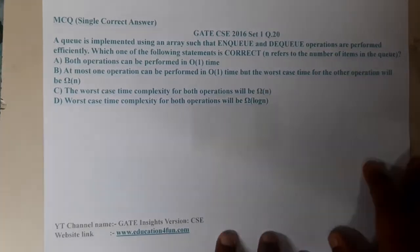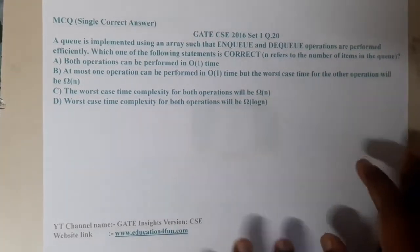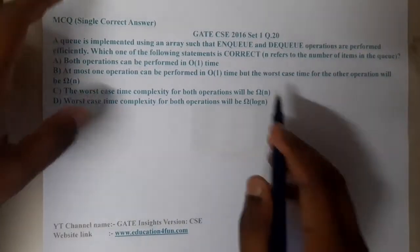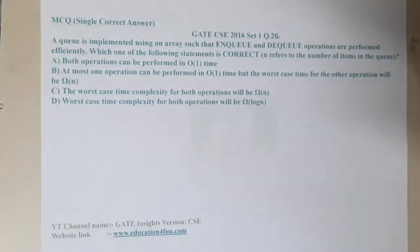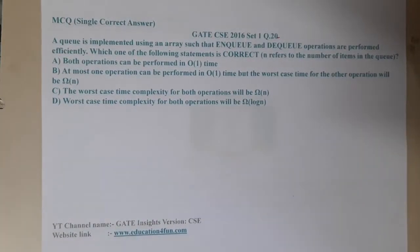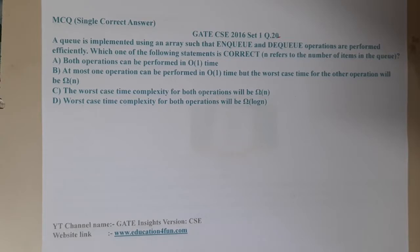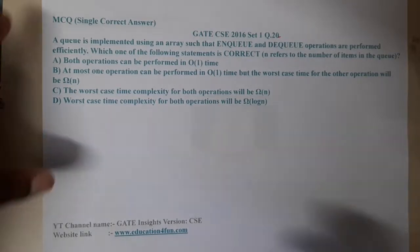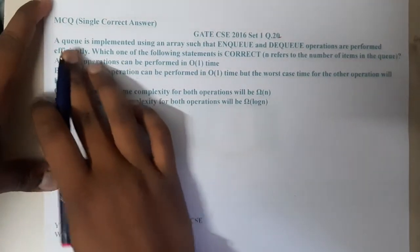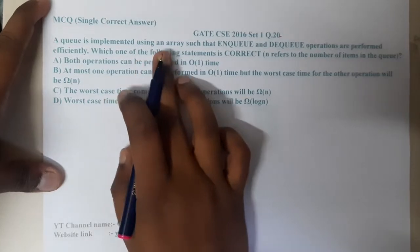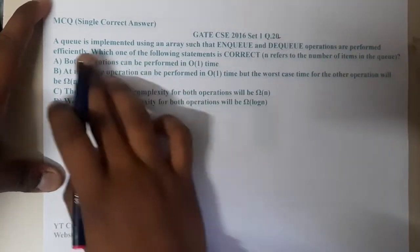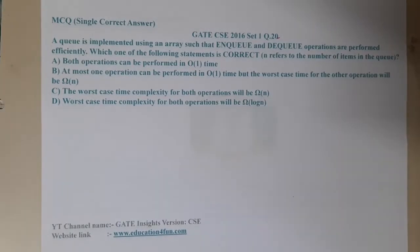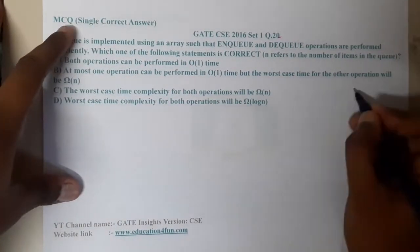Hello guys, we are back with our next lecture. In this lecture, let us continue with the next question — a GATE CSC 2016 Set 1, Question 20. This is also a question based on queues. A queue is implemented using an array such that enqueue (nq) and dequeue (dq) operations are performed efficiently.